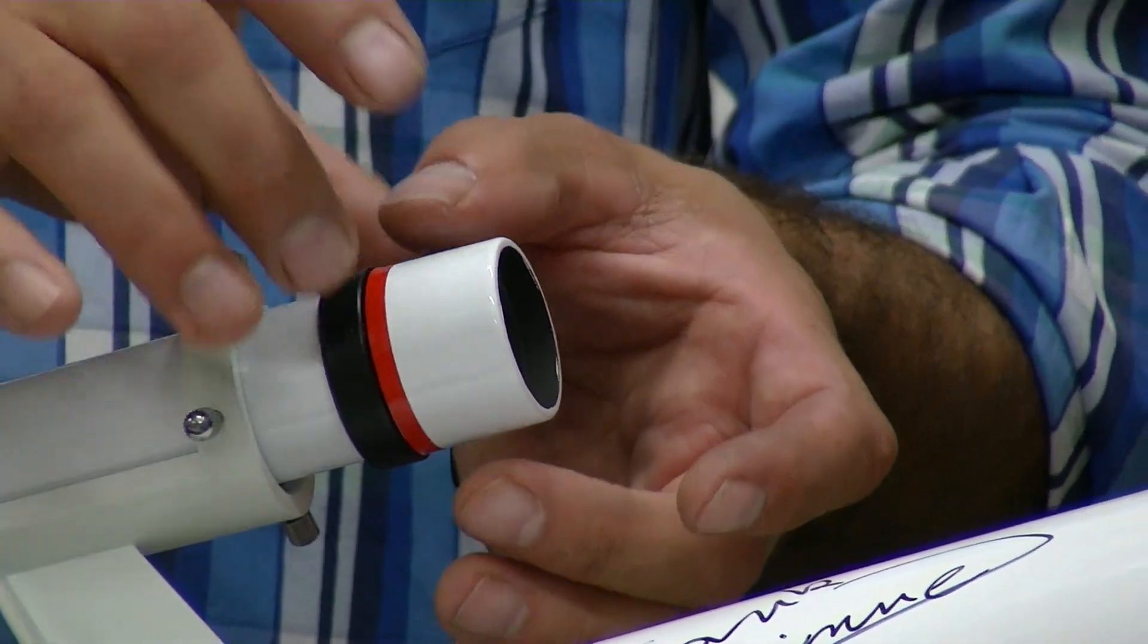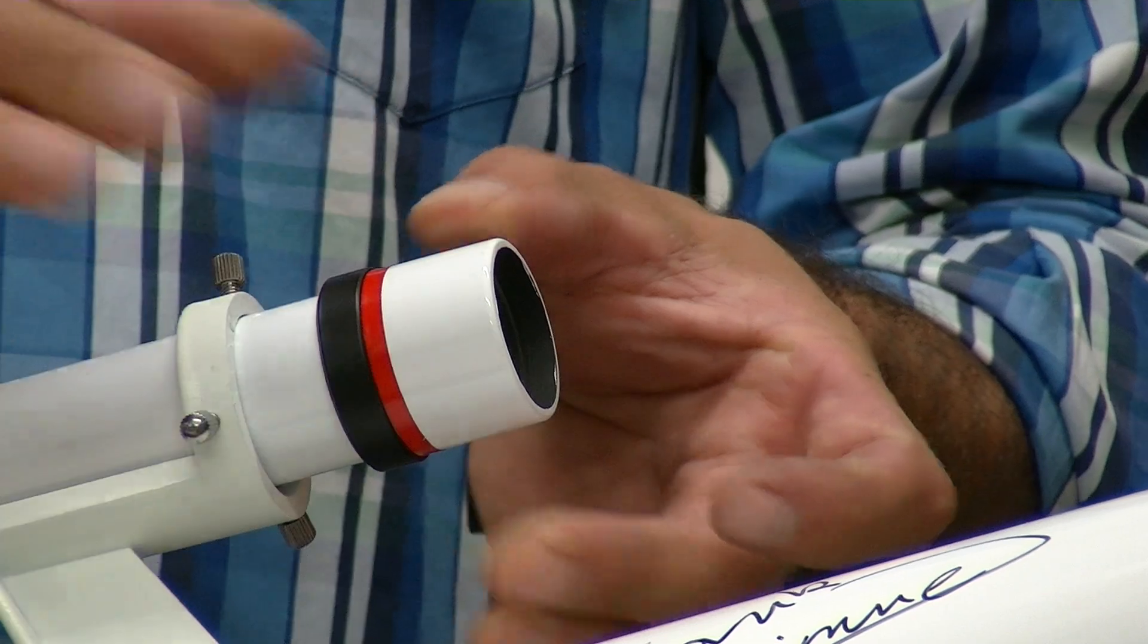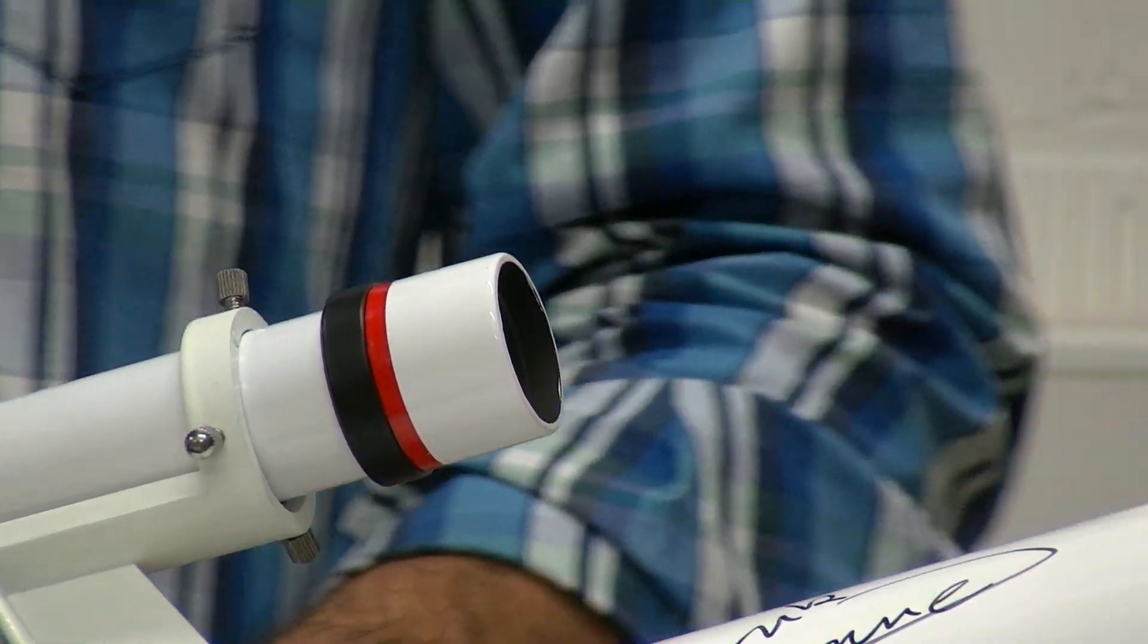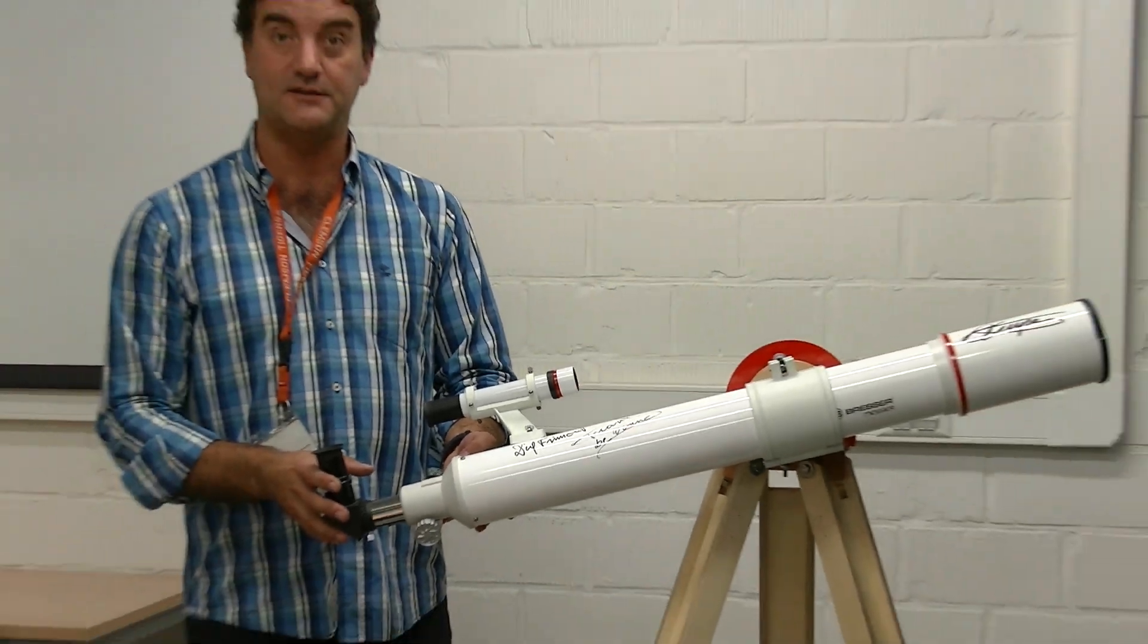When the image is sharp, you just tighten the black ring again by holding the front lens. This way you focus the finderscope. If this is all done, you can use a telescope. Have fun with your telescope.